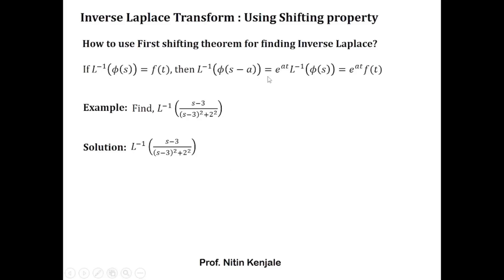So we first write out e^(at), that is e^(3t), multiplied by L⁻¹{s / (s² + 2²)}. But this is nothing but the Laplace of cos(2t), so L⁻¹{s / (s² + 2²)} can be replaced by cos(2t). Therefore the answer is e^(3t) · cos(2t).